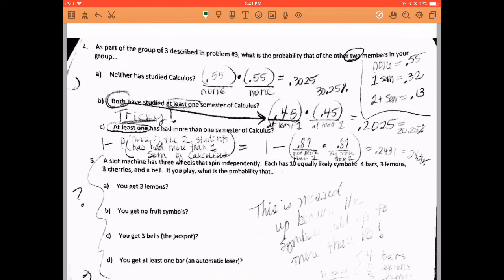Alright. Now to the next one. We now are talking about selecting two students from that group. Two students. So A says, neither of those two students has studied calculus. So with neither of those two students, the first student has not studied calculus, and the second student has not studied calculus. And that again is the 0.55 again. So there's how you get your 30.25%.